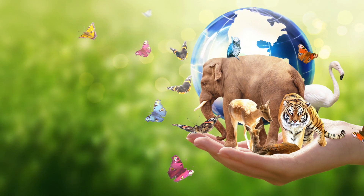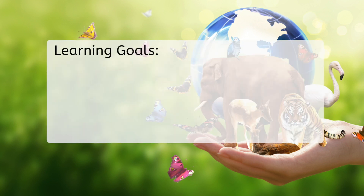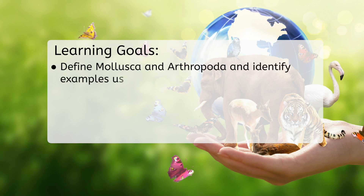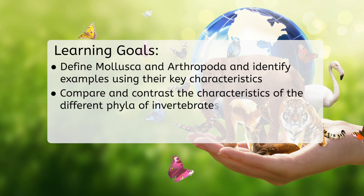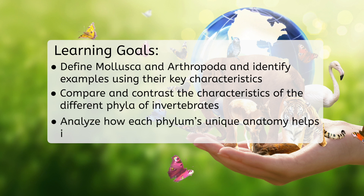But before we get started, let's look at our goals for this lesson. By the end, you'll be able to define Mollusca and Arthropoda and identify examples using their key characteristics, compare and contrast the characteristics of the different phyla of invertebrates, and analyze how each phylum's unique anatomy helps them survive in their environment.